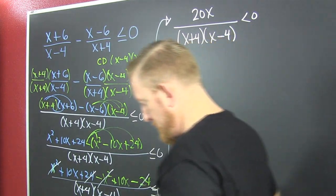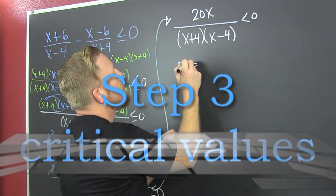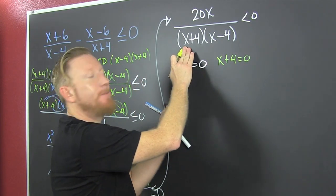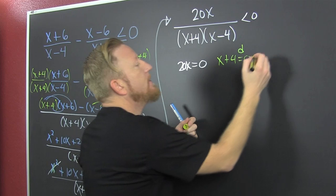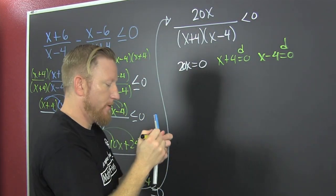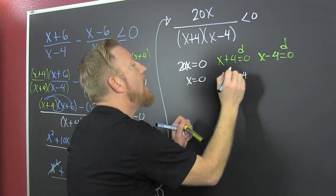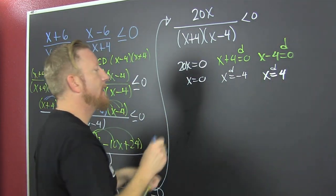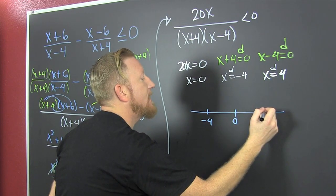So now: 20x is equal to 0. Or x plus 4 is equal to 0 - now that x plus 4 is in the denominator, so I'm just gonna give it that D, because it's in the denominator. And that x minus 4 equals 0, and it also gets the D because it's in the denominator. We go and we solve all of those: x is equal to 0, because 0 divided by 20 is 0. Then x is equal to minus 4 - still got that D. And x is equal to 4 - still got that D. Now we go and we put those on a number line: that's a minus 4, that's a 0, and that's a 4.